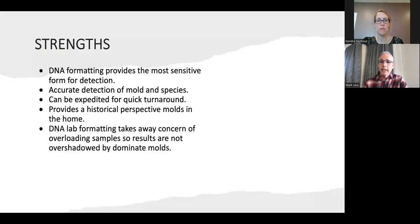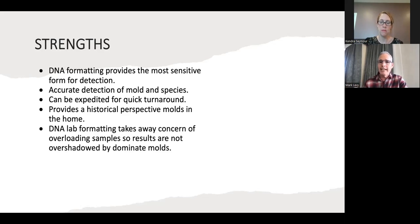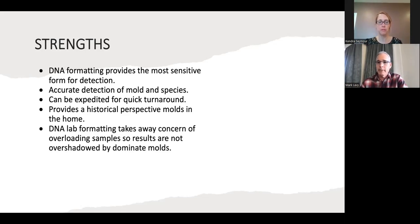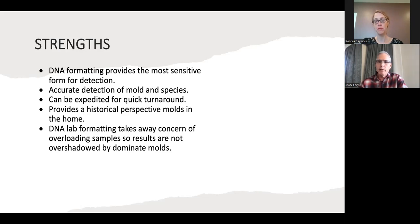The strengths are really within the DNA formatting itself, because it's the most sensitive form for detection and identification of the different types of molds and species. Because of that, it can help us identify not just the molds and species, but certain kinds of molds that have the capability of producing mycotoxins. It also has a quick turnaround time, provides a historical perspective of different types of molds within the home, and the DNA formatting really takes away the concern of samples being overloaded by more dominant molds or debris.